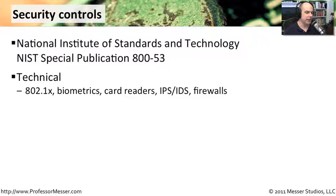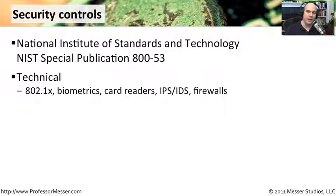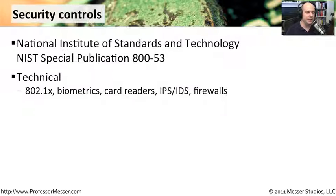For instance, the technical class — what can we do to help mitigate the risk associated with technical things in our environment? We can deal with network access control, 802.1x. We could put in biometrics and card readers, or we could purchase IPS systems and firewalls. All of these are technical ways to mitigate risk, as long as you're implementing them properly in your environment.